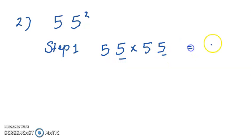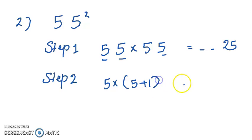This is 5 and 5 we multiply, that is 25. Then before that two more digits. Step 2 - this 5 and 5 plus 1 we multiply, 5 into 6, that is 30.